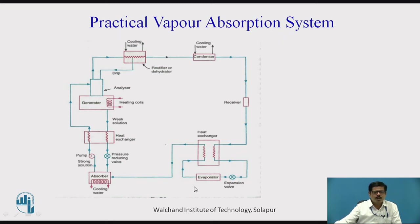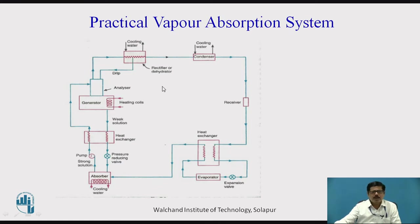The major components which we have studied in simple vapor absorption system remain the same, but in addition some accessories are added in this practical vapor absorption system. The basic components in simple vapor absorption system were evaporator, absorber, pump, generator, then pressure reducing valve, then after generator we were having condenser, receiver, and the pressure reducing valve, that is expansion valve, and then evaporator. These components remain unchanged, but in order to make the system more efficient and to improve the working of this plant, some accessories are fitted.